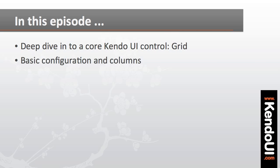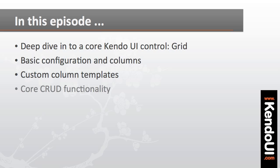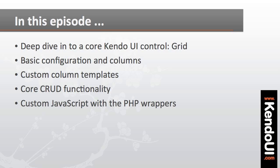I'll show you how to get the basic grid configured with columns that come from the API data, how to create custom column templates from a nested object in the data, how to set up add, edit, and delete functionality for the grid, and how to mix the PHP with a little bit of custom JavaScript to create a custom editor for the records that we'll be working with.